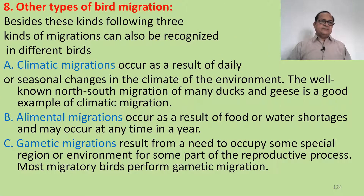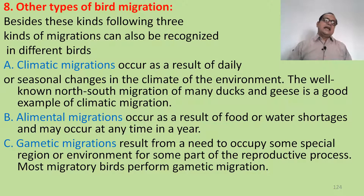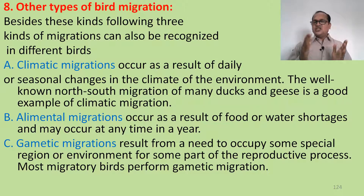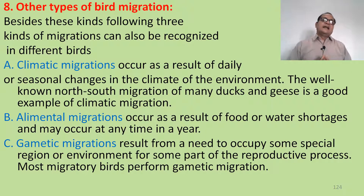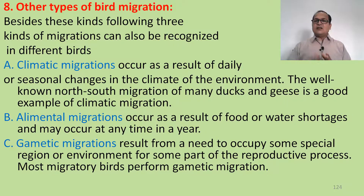The eighth type covers other kinds of migration. Besides the main types, three additional kinds are recognized: climatic migration, elemental migration, and gametic migration. Climatic migration occurs according to seasonal climate changes; the well-known north-south migration of many ducks and geese is a good example. Elemental migration occurs as a result of food scarcity or shortage and may happen at any time of year. Gametic migration results from the need to occupy a special region or environment for some part of the reproductive process. Most migratory birds undergo gametic migration.